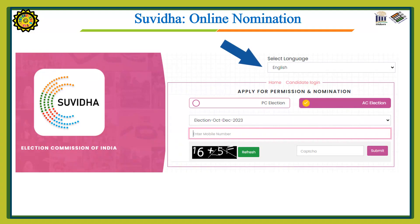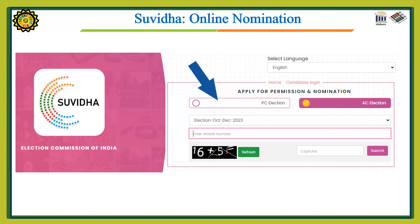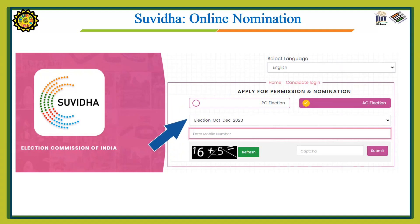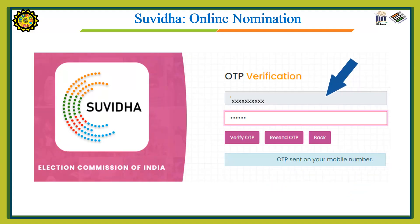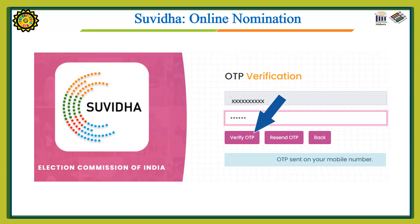Now we will fill the online nomination form. First, you have to select the language. Then select which type of election you are contesting — if you are contesting a PC election (Parliament election), select PC; if you are going for an Assembly election, select AC election. Then select the election month, enter your mobile number, enter the captcha, and submit the form. You will receive an OTP on your mobile number — enter the OTP and press the verify OTP button.